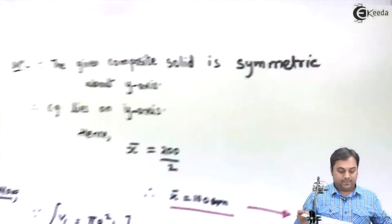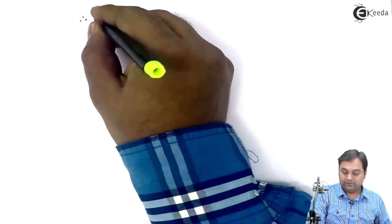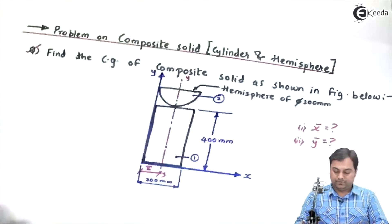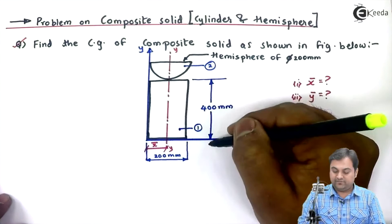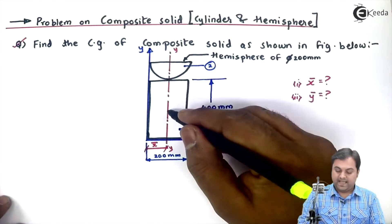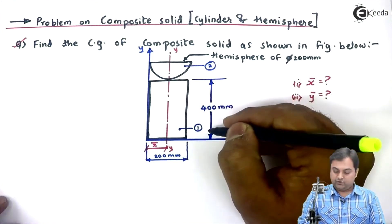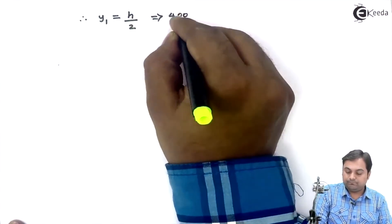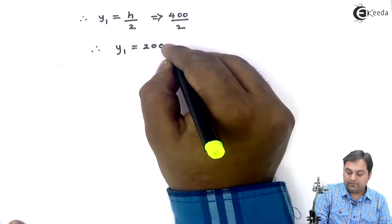After getting V1, we calculate Y1. The CG of a cylinder lies exactly at half of its height, so Y1 equals h divided by 2, which is 400 divided by 2. Therefore Y1 equals 200 mm.